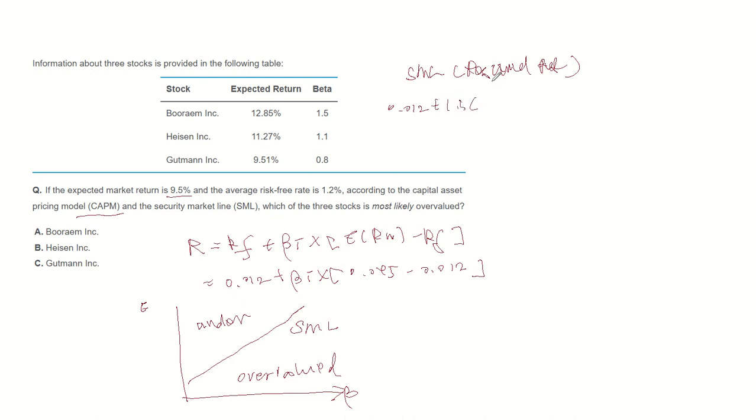And market expected return 0.095 minus 0.012 becomes 0.1365. So expected return is less than required return, so Bram is overvalued.